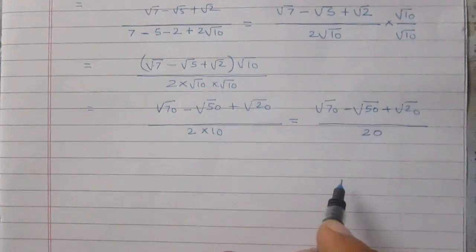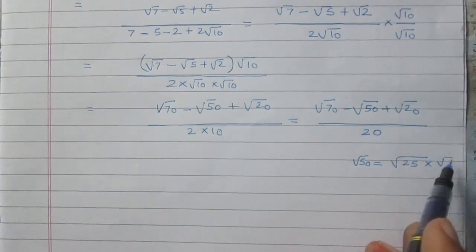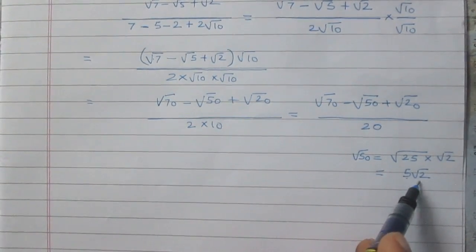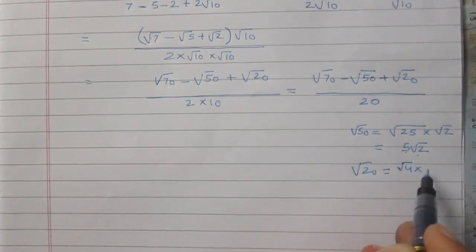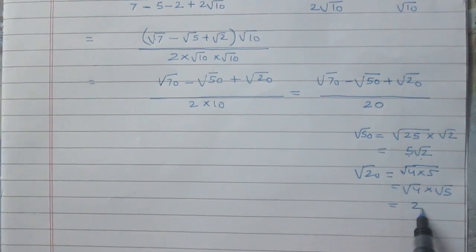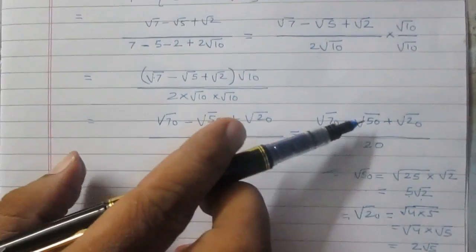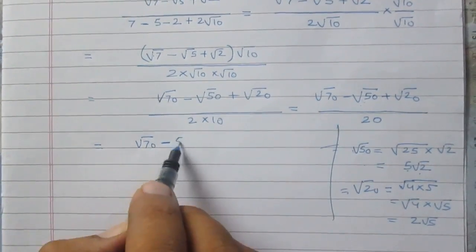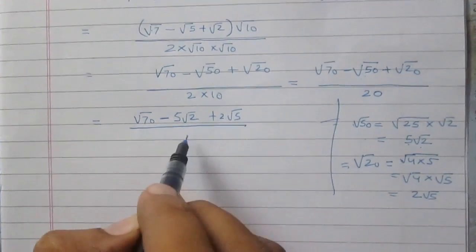Now we simplify square root 50 and square root 20. Square root 50 equals square root 25 times square root 2, and since square root 25 is 5, we get 5 times square root 2. Similarly, square root 20 equals square root 4 times square root 5, and since square root 4 is 2, we get 2 times square root 5. Substituting these results, the final answer is (√70 - 5√2 + 2√5) divided by 20.